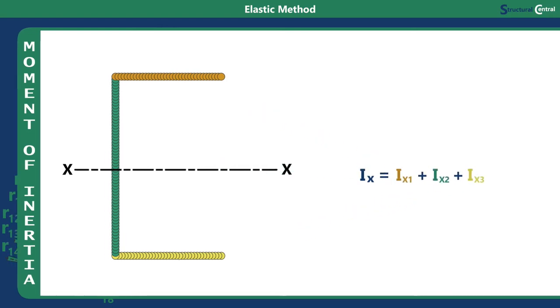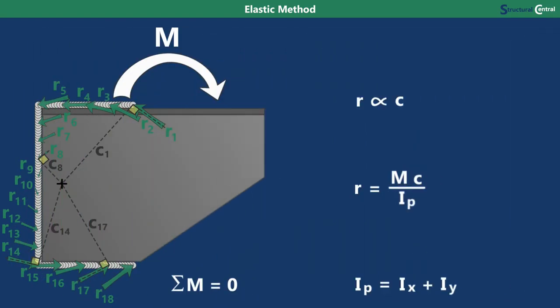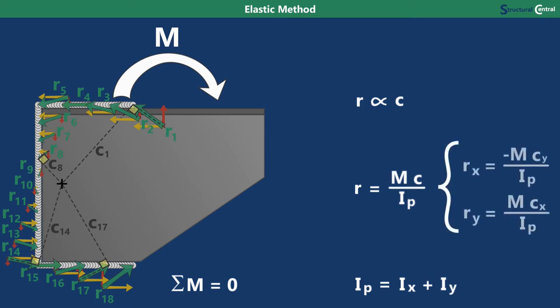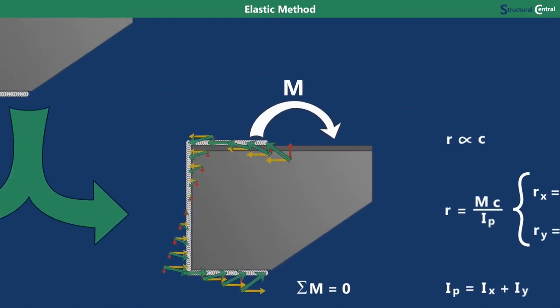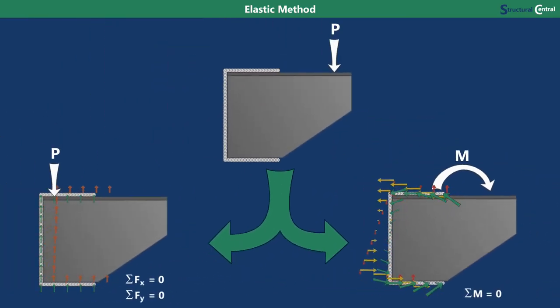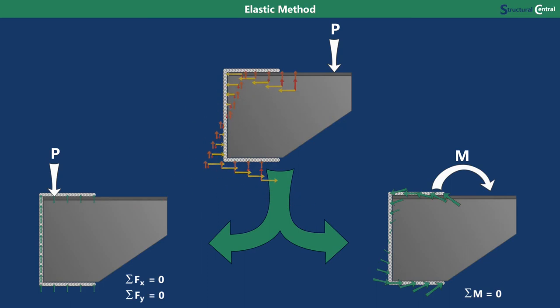Now that you know how to determine the moment of inertia, you can determine the reaction at any point in the weld due to the concentrated moment. Since this reaction will need to be combined with the reactions from the concentric load, it will be useful to split it up into its X and Y components, which you can do by using similar equations to determine each component of the reaction directly. Now that you have the reactions from the concentric load and from the concentrated moment, you just add the components together to determine the stress at any location of the weld.